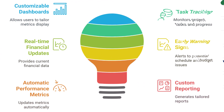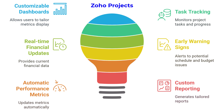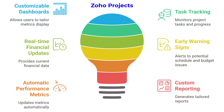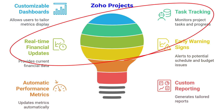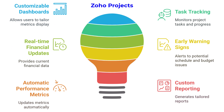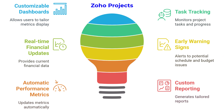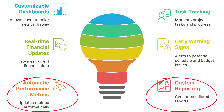Zoho Projects offers another interesting perspective on earned value analysis through its integration with other Zoho suite tools. It is a cloud-based platform for small to medium-sized businesses, featuring dashboards that can be customized to include various metrics of earned value analysis. By combining task tracking with real-time financial updates, Zoho allows managers to monitor both schedule and cost dimensions effectively. The system is less complex than Primavera P6 and offers easier integration than Trello. Zoho's reporting features might not be as comprehensive as P6, but they are robust enough to provide early warning signs of schedule slippage and budget overruns, and the platform can automatically update performance metrics and generate custom reports.